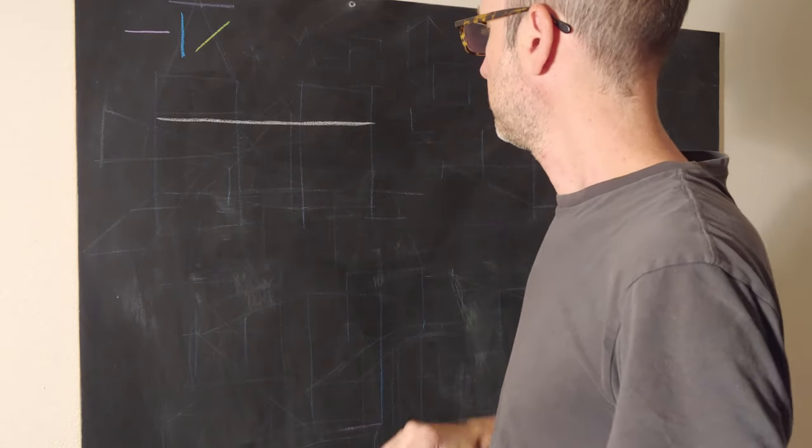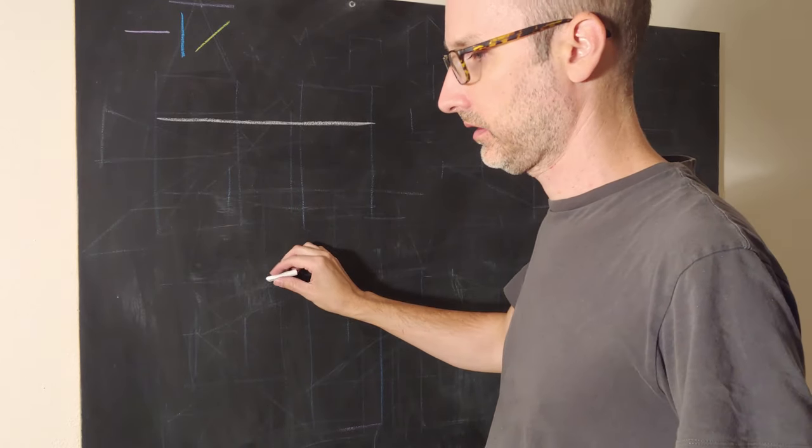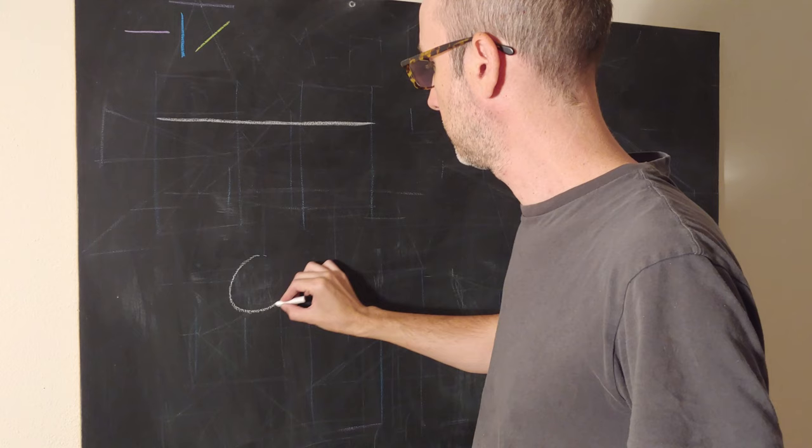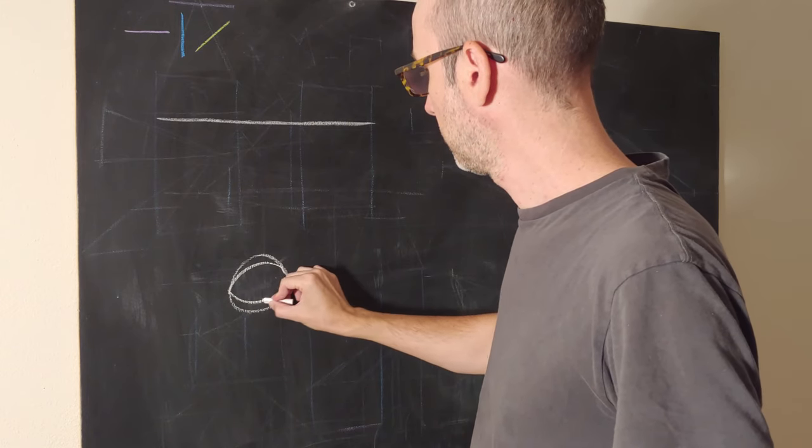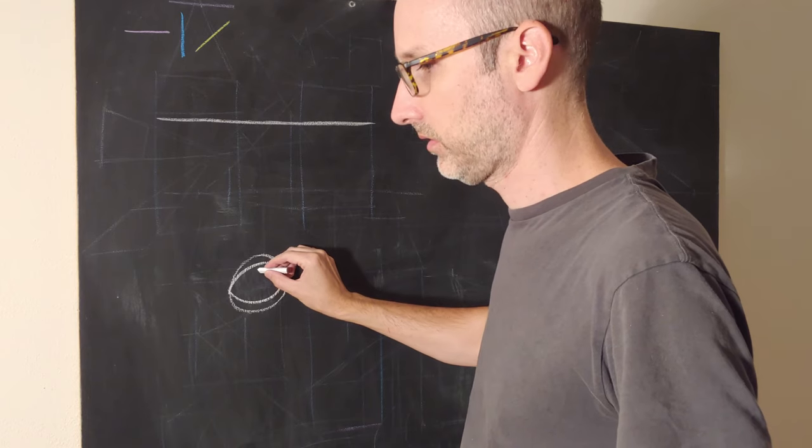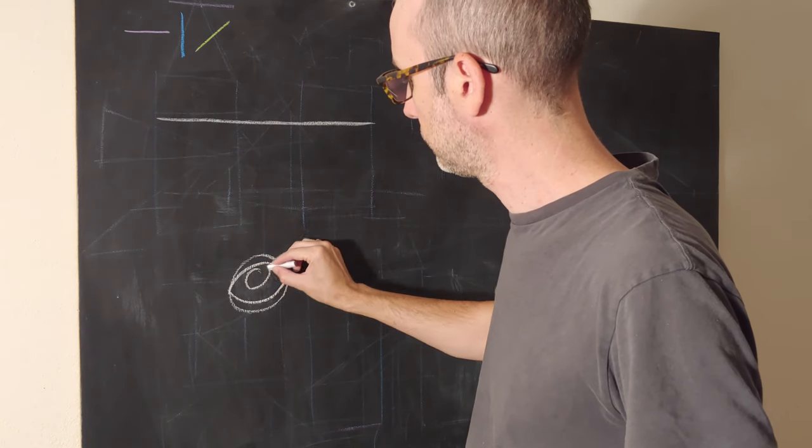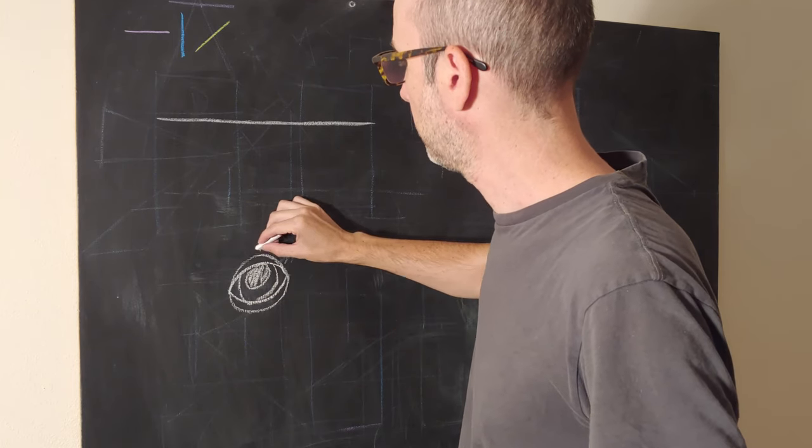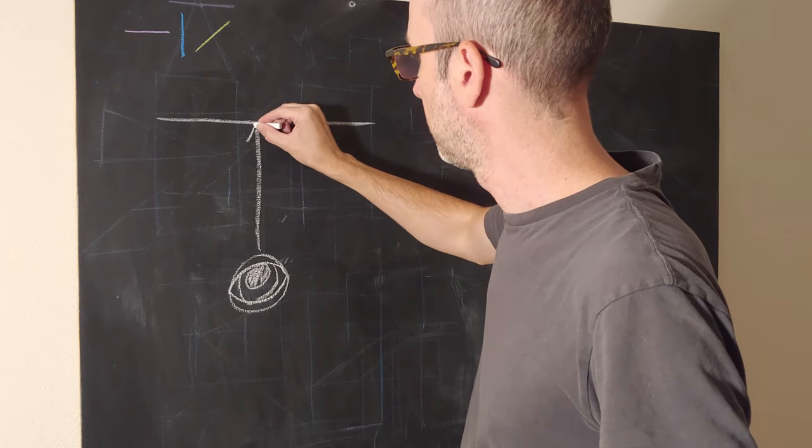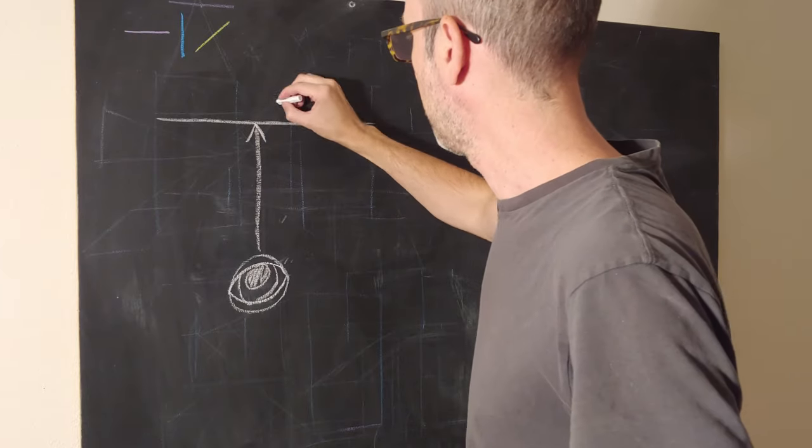So let's pretend you're looking down, and this is you, right here, this is your eyeball, and you're looking this way at your horizon line.